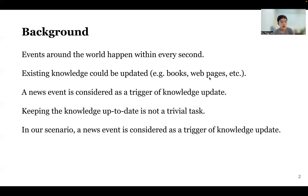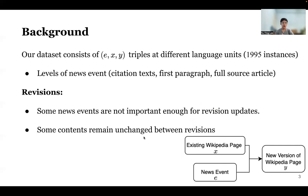We argue that a trigger is required to update or renew an existing web page. To apply the idea of the news trigger event, we crawl and parse the Wikipedia page, and the events are represented as trigger events. Each event E is represented in three levels of knowledge, including the citation text, the first paragraph of the article, or the full source article input.